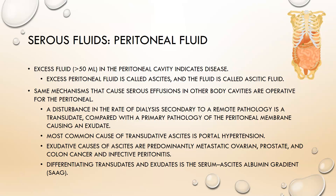Lastly, let's look at peritoneal fluid. Excess fluid greater than 50 ml in the peritoneal cavity indicates disease. This excess peritoneal fluid is called ascites and the fluid is called ascitic fluid. The same mechanisms that cause serous effusions in other body cavities are operative for the peritoneal cavity. A disturbance in filtration secondary to a remote pathology results in a transudate, while primary pathology of the peritoneal membrane causes an exudate. The most common cause of transudative ascites is portal hypertension. Exudative causes are predominantly metastatic ovarian, prostate, and colon cancer, and infective peritonitis. Differentiating transudates and exudates uses the serum-ascites albumin gradient, or SAAG.